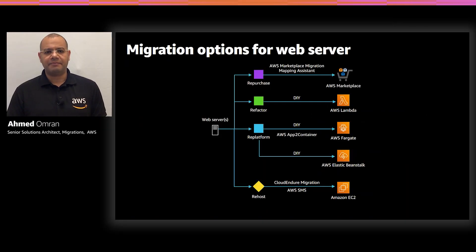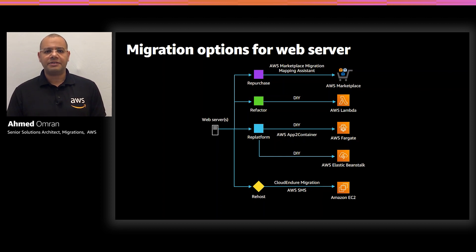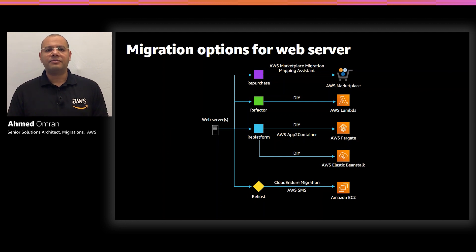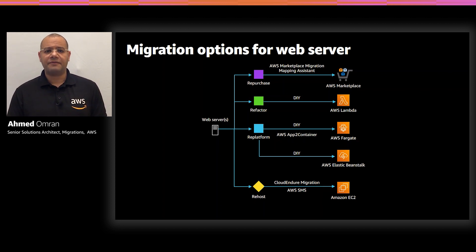Let's start with the web server migration options. One of the most common options is rehosting, also known as lift and shift, where you migrate a server to an EC2 instance without any change in the operating system or the application layer. Rehosting can be automated with tools. There are many tools available from AWS and our partner ecosystem. For example, CloudEndure Migration and Server Migration Service are free tools from AWS that can help accelerate the rehosting process.